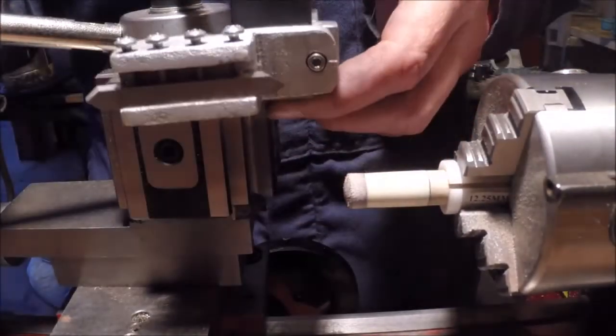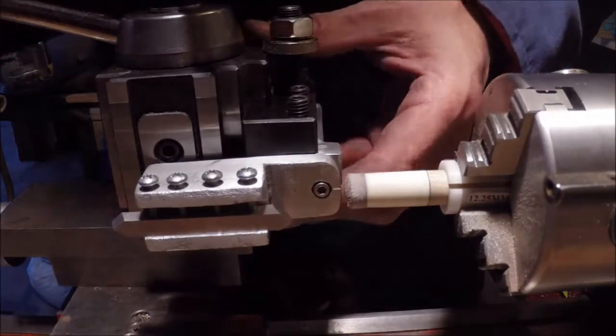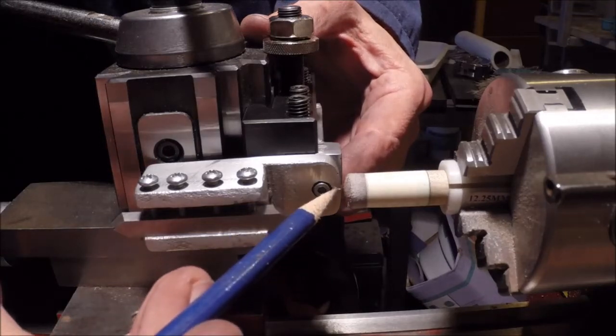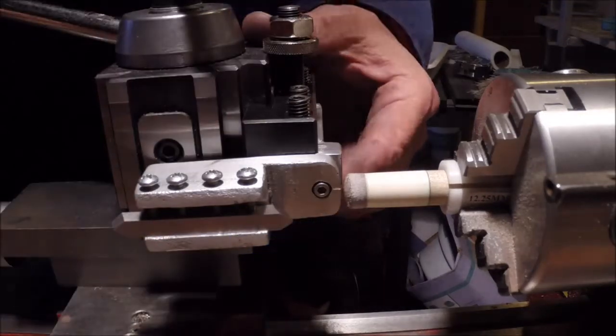It drops in my quick change tool post, and I lock it down. I have to set that center pivot point at the very center of the tip. That's why I marked it.